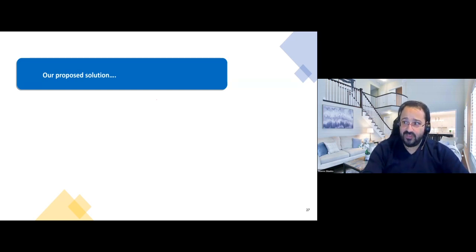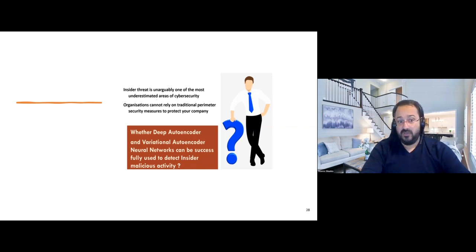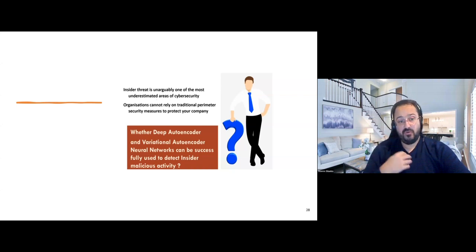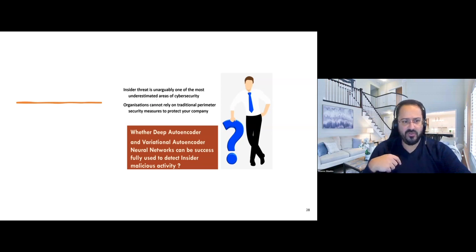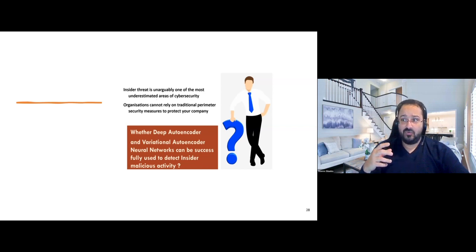After seeing all these things, we said: all of these systems currently just correlate things with some code. What if we use artificial intelligence? Specifically, there are many machine learning algorithms. We asked: can a deep autoencoder or variational autoencoder — a variation of the deep autoencoder — be successful for detecting insider threat malicious activity? Generally, neural networks are very good at identifying images and are well used in image processing.